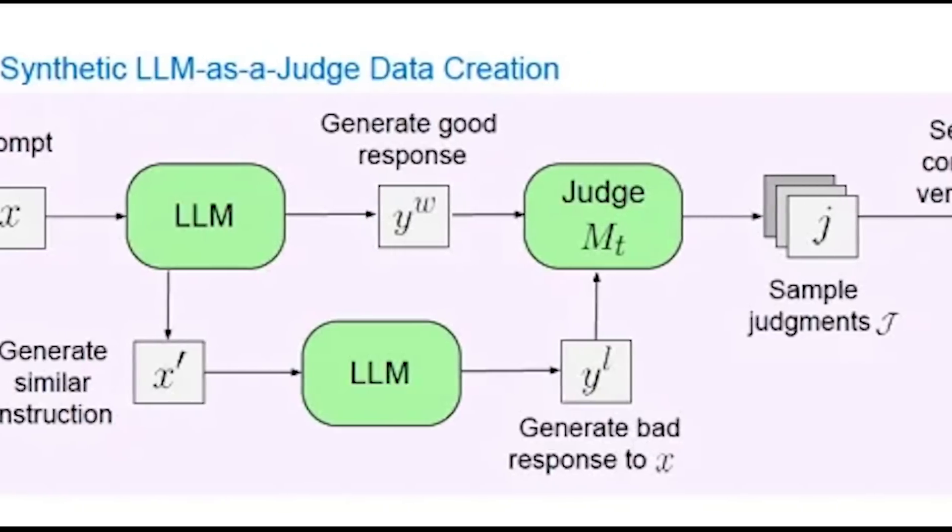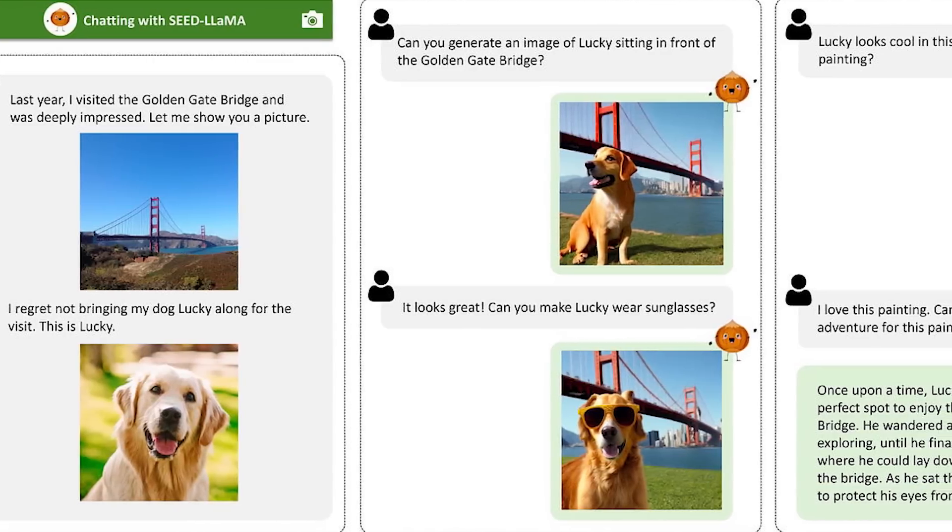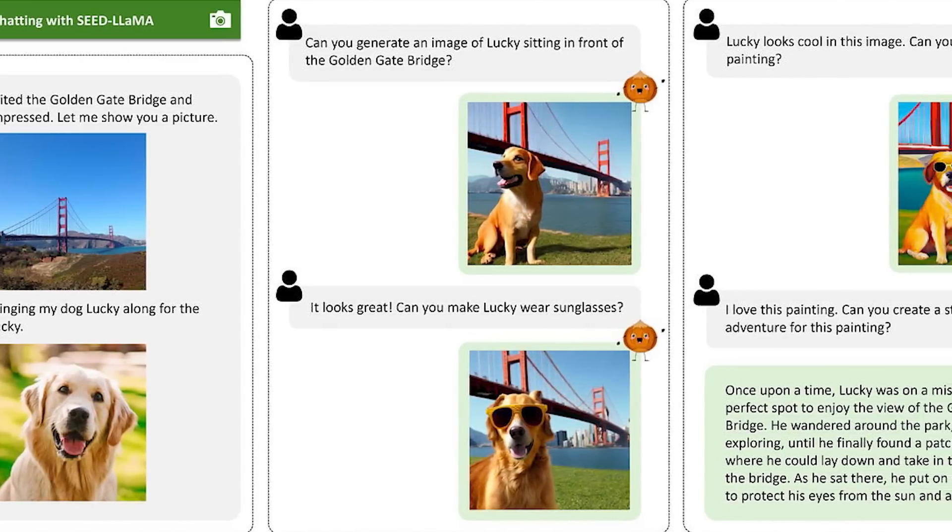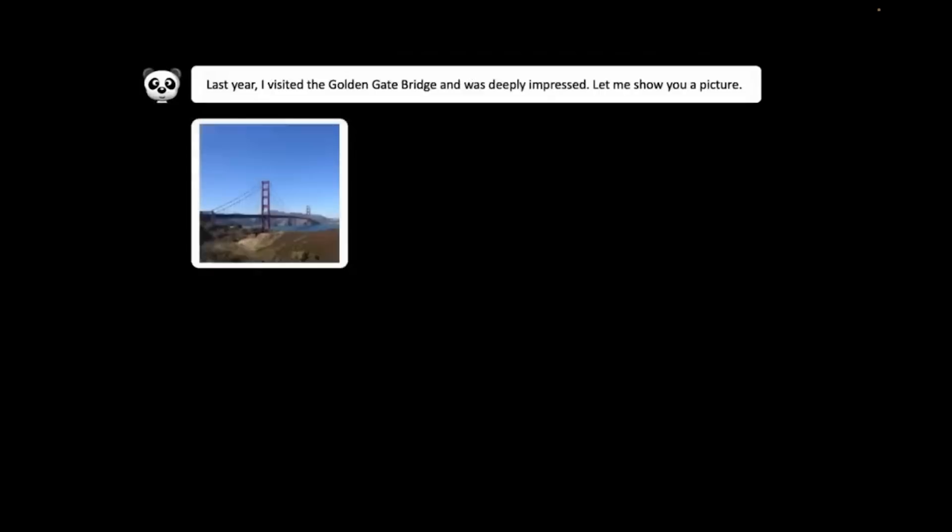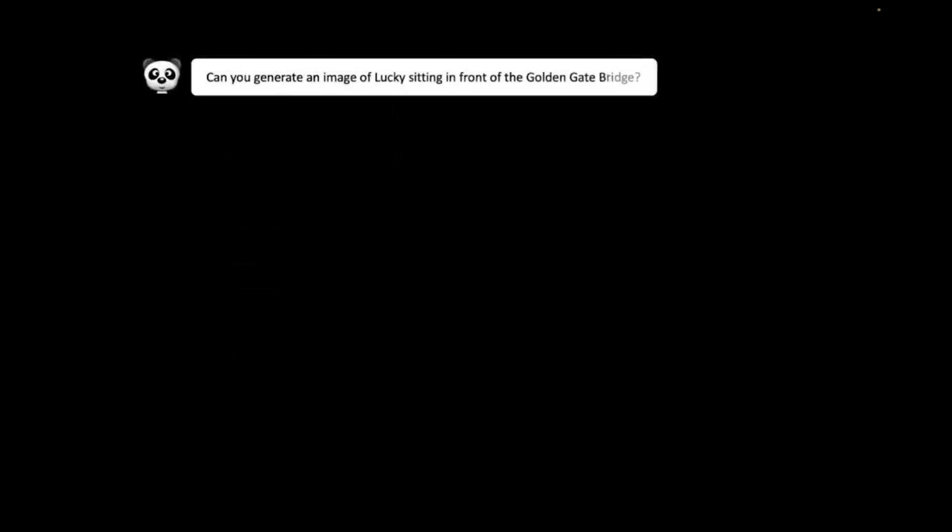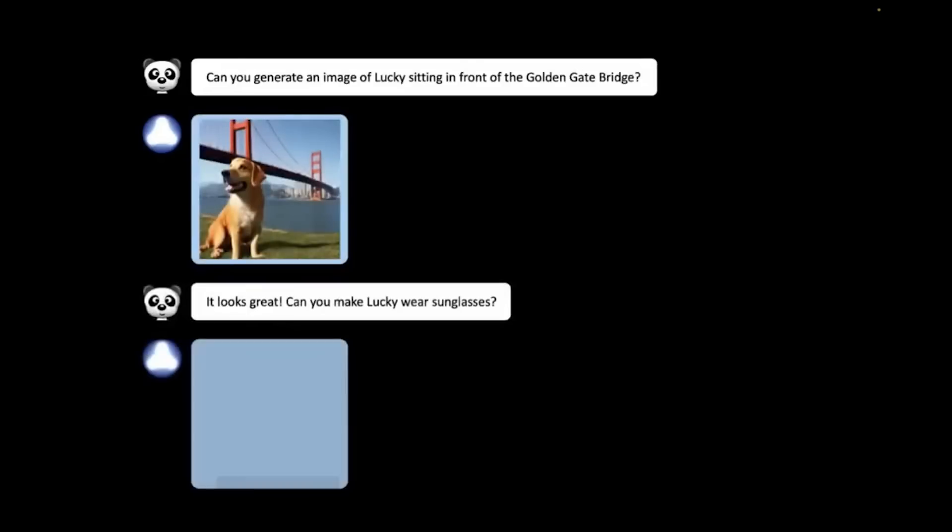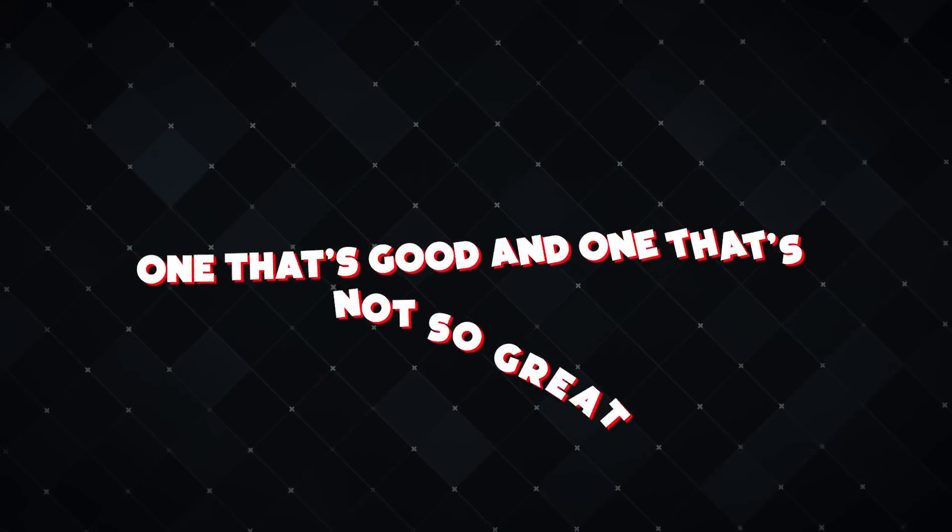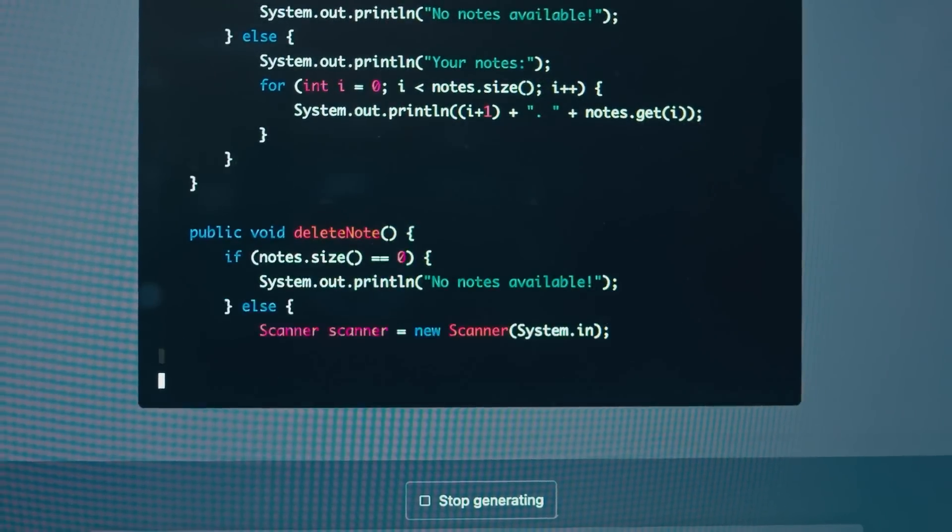The self-taught evaluator starts with what's called a seed language model. This model is already trained and tuned to understand what humans like. Think of it as the starting point. This seed model dives into a massive pool of human-written instructions, basically examples of tasks it might need to tackle in the real world. From this pool, the evaluator picks out some instructions and creates two responses: one that's good and one that's not so great. It labels them as chosen and rejected.